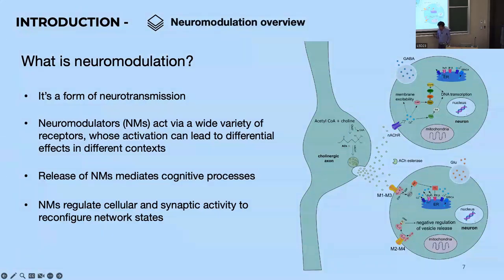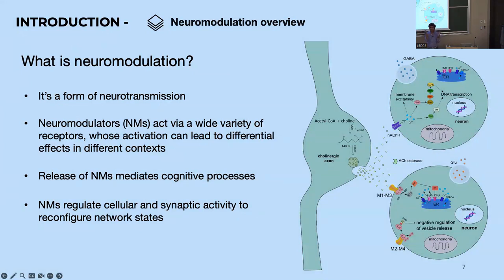What is neuromodulation? Simply put, it's a form of neurotransmission. Neuromodulators can act through a variety of receptors whose timescales of activation can lead to very differential effects in various contexts. The release of neuromodulators mediates cognitive processes, and these neuromodulators regulate cellular and synaptic activity to reconfigure network states.